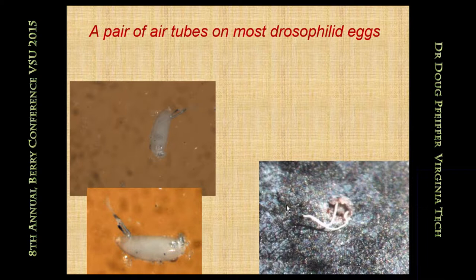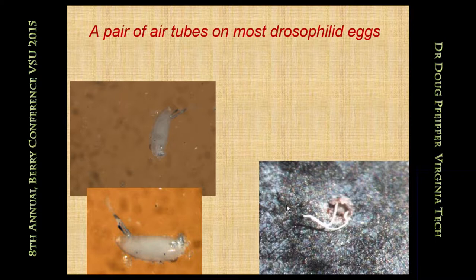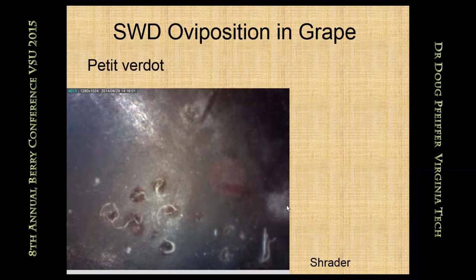With drosophilid eggs, they generally have a pair of respiratory horns protruding from one end. You can see that in the left pair of photographs. The picture on the right is a blueberry at Kentland Farm, our research farm — you can see the respiratory horns sticking out. When the female inserts the egg into the berry and pulls free, she leaves those respiratory horns protruding, which you can see with a hand lens. Here is a red variety, Petit Verdot, and a white variety, Viognier, showing the respiratory horns sticking out in the lab.